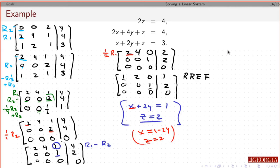So that means then for my solution is x, y, and z. x is 1 minus 2y because x was a pivot. I'm going to solve for that.